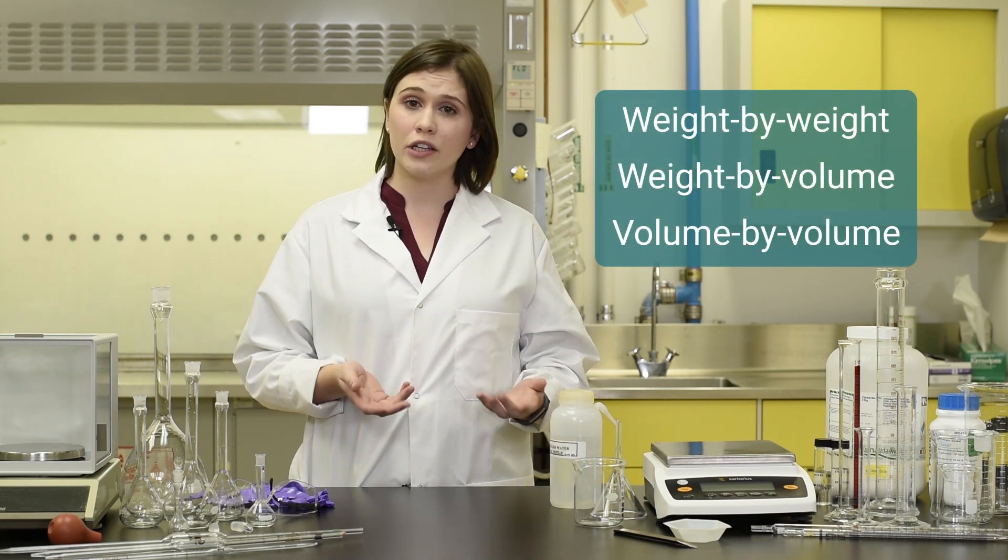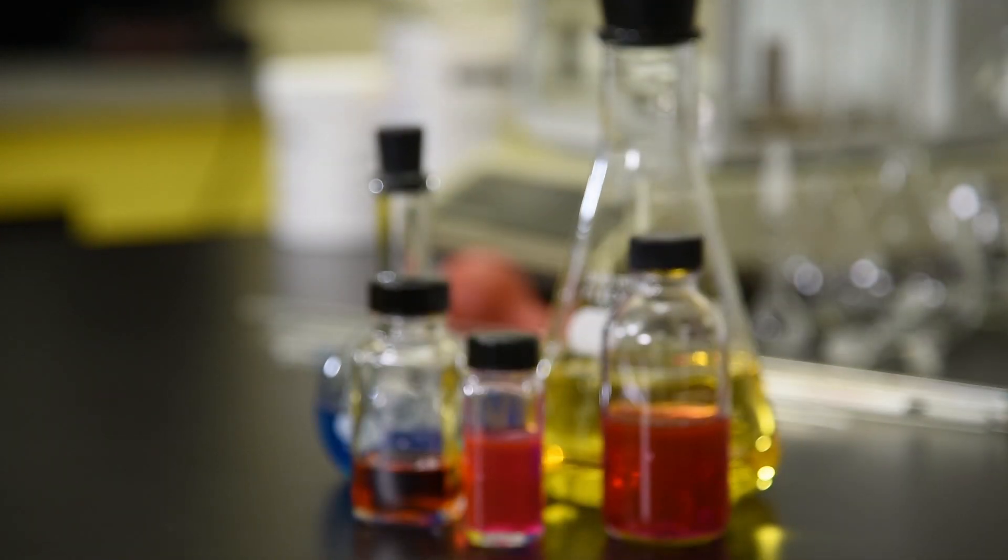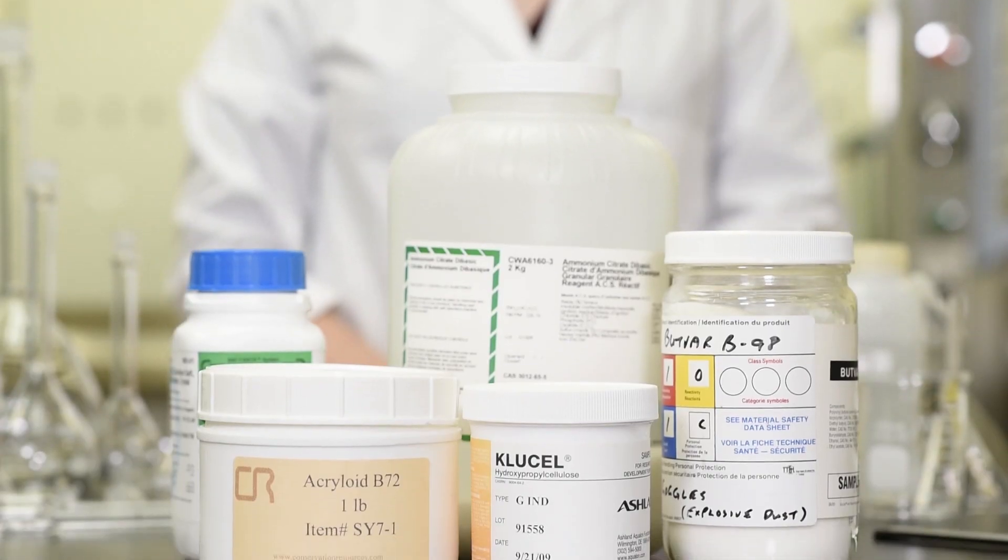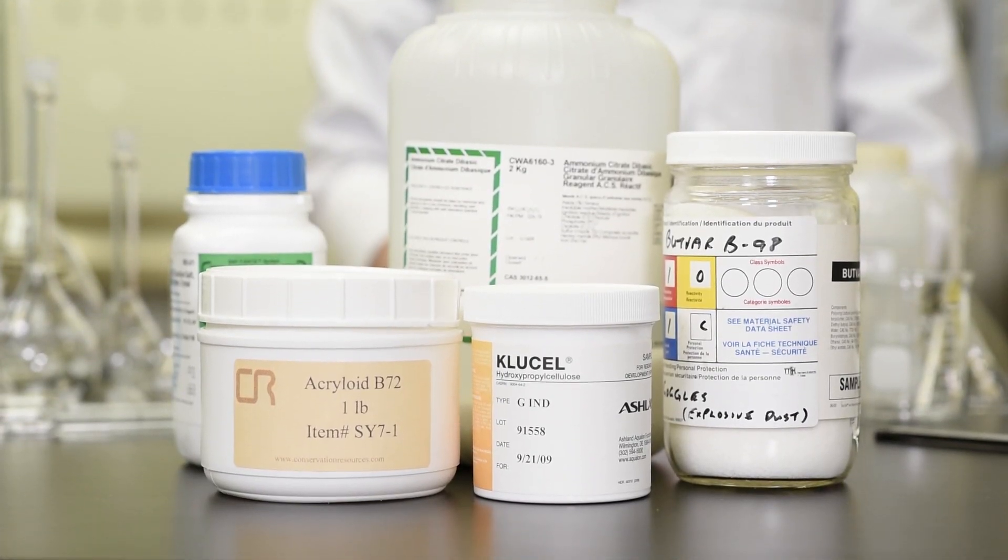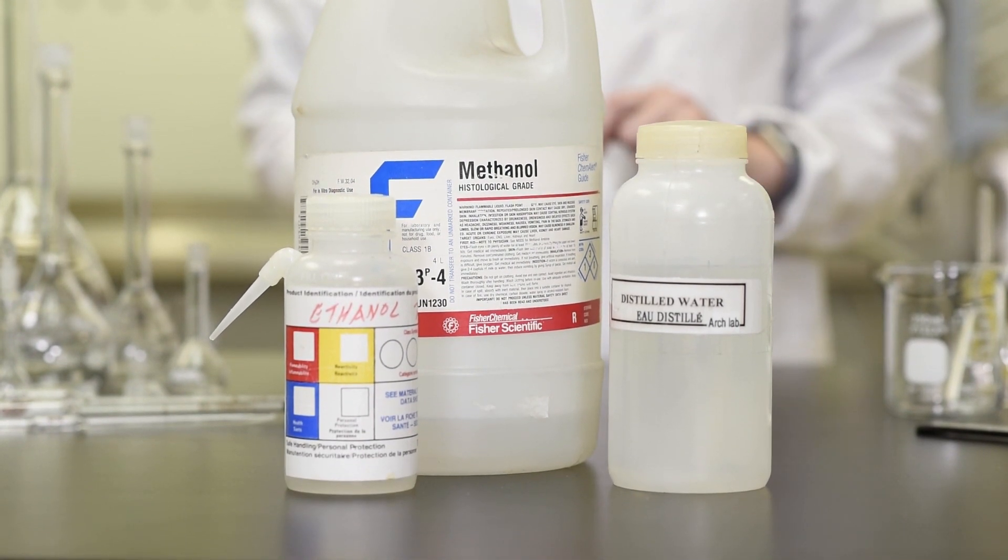Unlike in chemistry where concentrations are expressed in molarity, in conservation we typically use percentages to denote concentration, like weight by weight, weight by volume, or volume by volume. In a solution there are two components: the solute and the solvent. The solute is the chemical being dissolved or diluted, and the solvent is the liquid doing the dissolving or diluting.